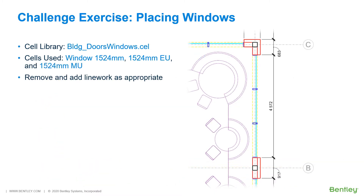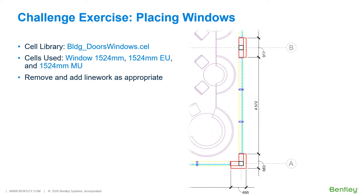As shown here, this is continuing the challenge exercise in the northeast corner, placing windows along the east face. Like the previous slide, continue to place windows using the dimensional data, as shown here, at the southeast corner of the building, where you will be placing windows along the east face.